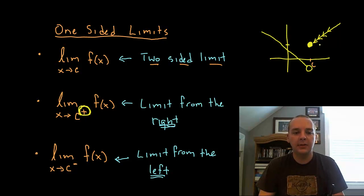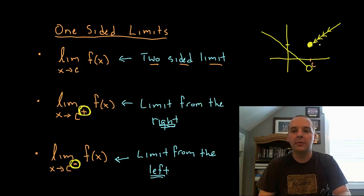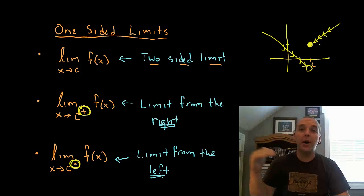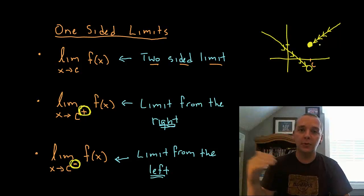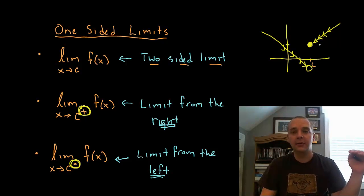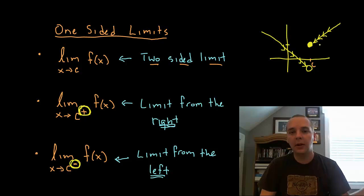Likewise, the limit as X approaches C with a little minus sign by the constant means from the left. The way I remember this: plus means from the positives, which are on the right-hand side of the X axis, and minus indicates from the negatives, or from the left-hand side of the real number line.